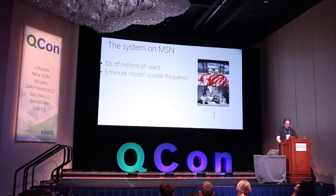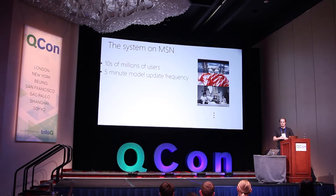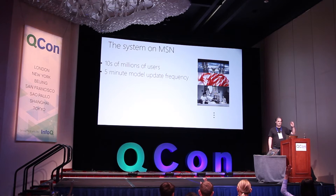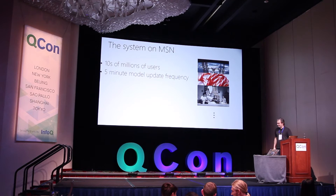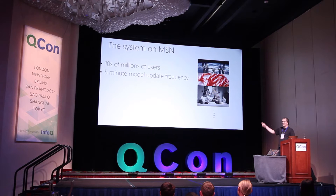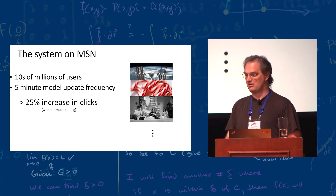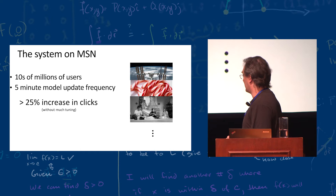When we did this, there were tens of millions of users, with about a five-minute machine-learned model update frequency. How many people have played with machine learning at all? This is a very fast model update frequency. This is the deployed model in production, and there was a greater than 25% increase in the number of clicks. It worked well.